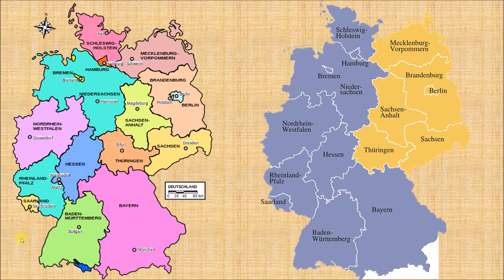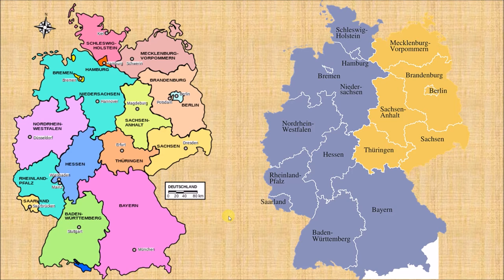The other states are larger in varying degrees. The smallest of the large states is the Saarland, and the biggest state of all is Bavaria, or as it is called in German, Bayern. Those states are all represented in the German political system, so keep them in mind when we get into the details of the system later on.